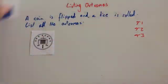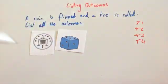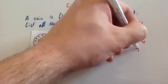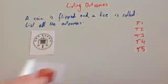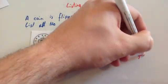We could get a tail and a four. So tail four. We could get a tail and a five. Tail five. We could also get a tail and a six. Tail six.